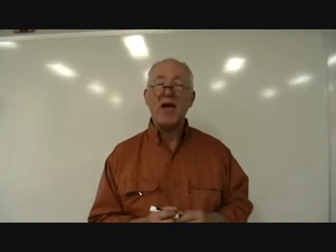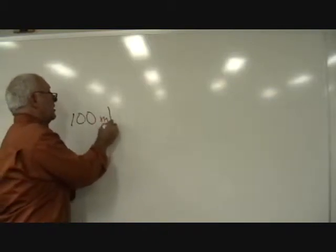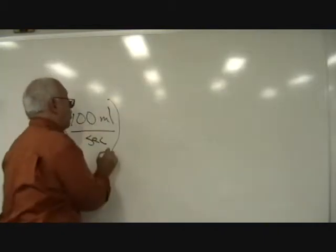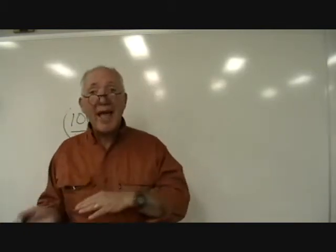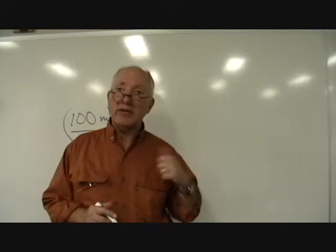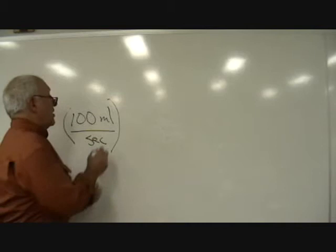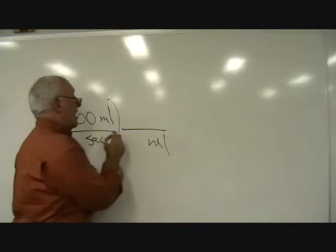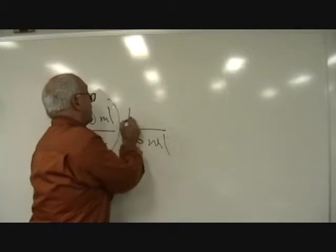We start with what we have. We have 100 milliliters per second. So we start with our 100 milliliters per second. Now our equivalency is between liters and gallons. So we need to change our milliliters to liters. So here we have milliliters on the top. To cancel, we have to have milliliters on the bottom. So this will allow us to cancel that unit. And we know that a thousand milliliters equals one liter.